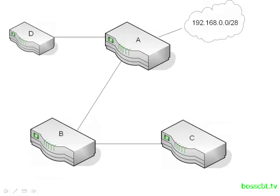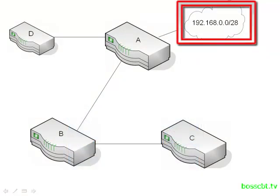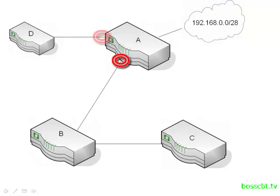Next, let's look at how a distance vector actually works on a router. When a router starts up running a distance vector protocol, the very first thing it does is populate its own route table with what it already knows — all of the directly connected subnets that are up and functioning. So router A, for instance, if the link to the 192.168 slash 28 subnet is up and working, that gets added to the route table. Likewise, the links between A and B, and A and D, if they have IP addresses and they're up and functioning, those directly connected subnets will be added as well.